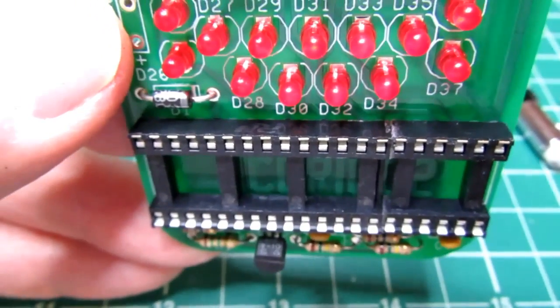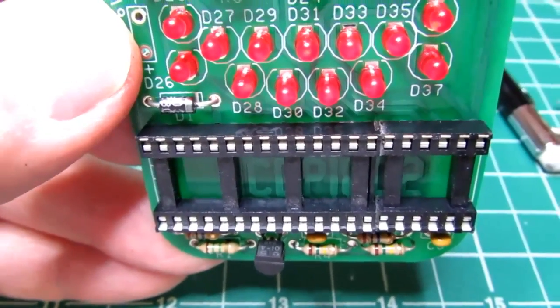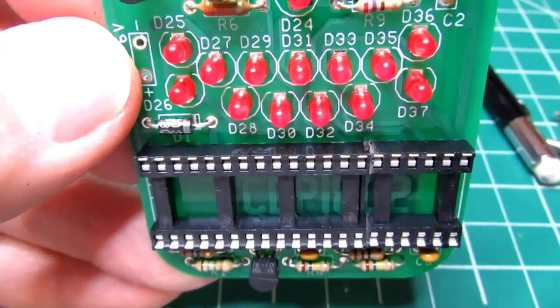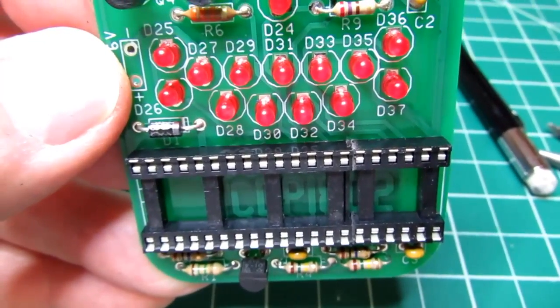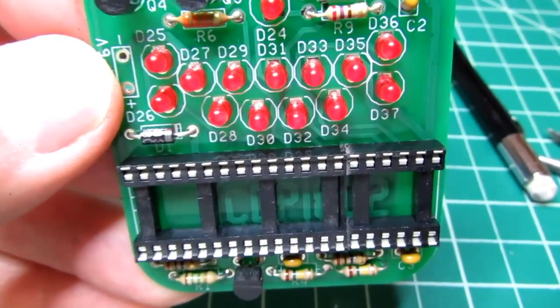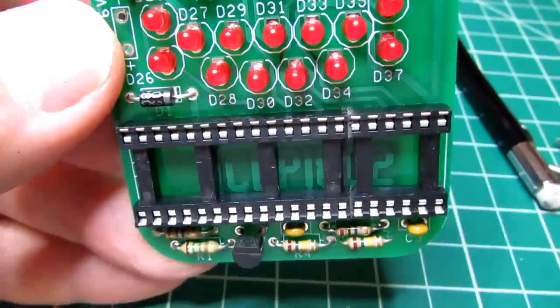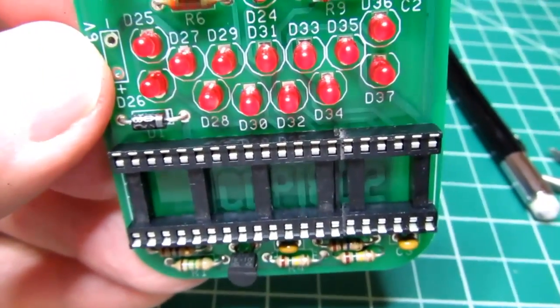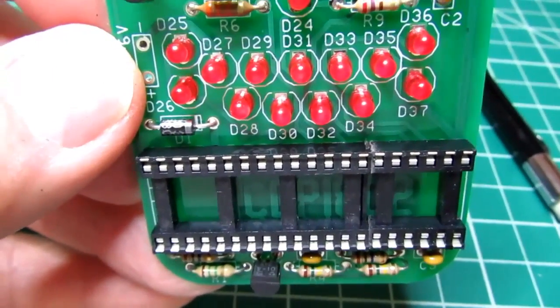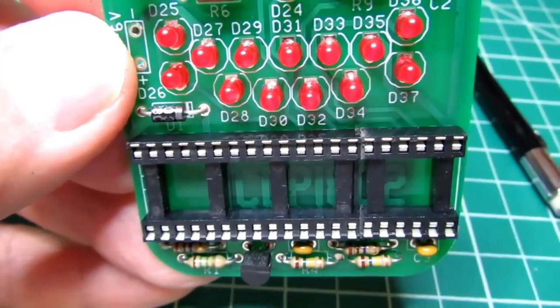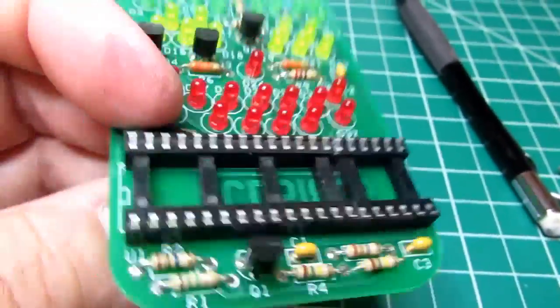The designer of the kit suggests that a socket be used for the 1802 microprocessor so it can be used as a chip tester. However, the kit does not come with a 40-pin socket. In my junk box, I did not find one, so I took a 28-pin socket like you might use for an EEPROM, sawed off another one, and put them together.